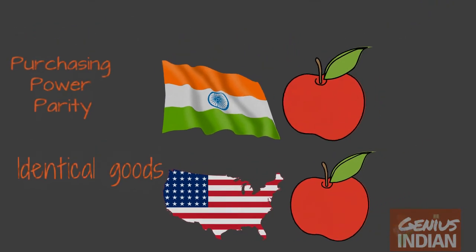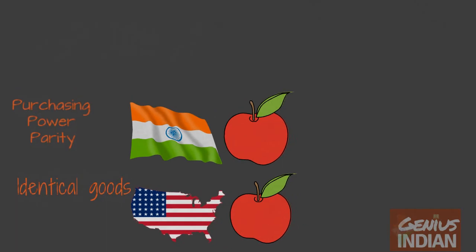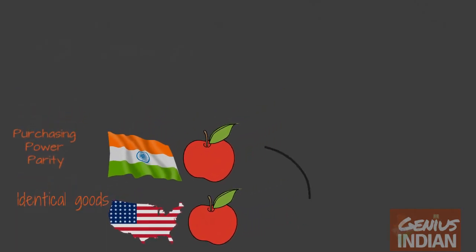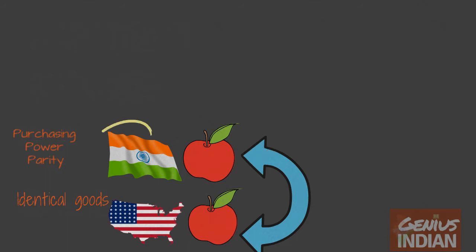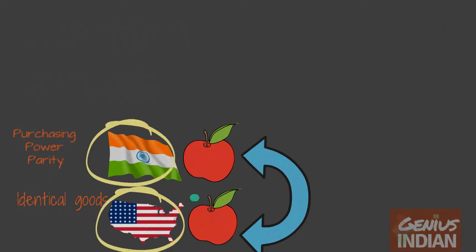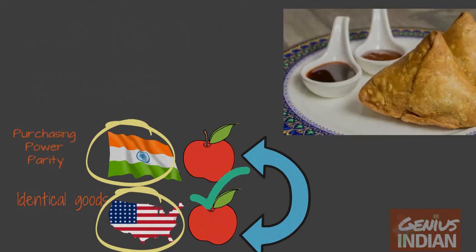In other words, PPP is the exchange rate that is derived from equating the price of a basket of identical goods in two countries. And in even simpler terms, PPP is calculated by comparing the cost of one product in two different countries.